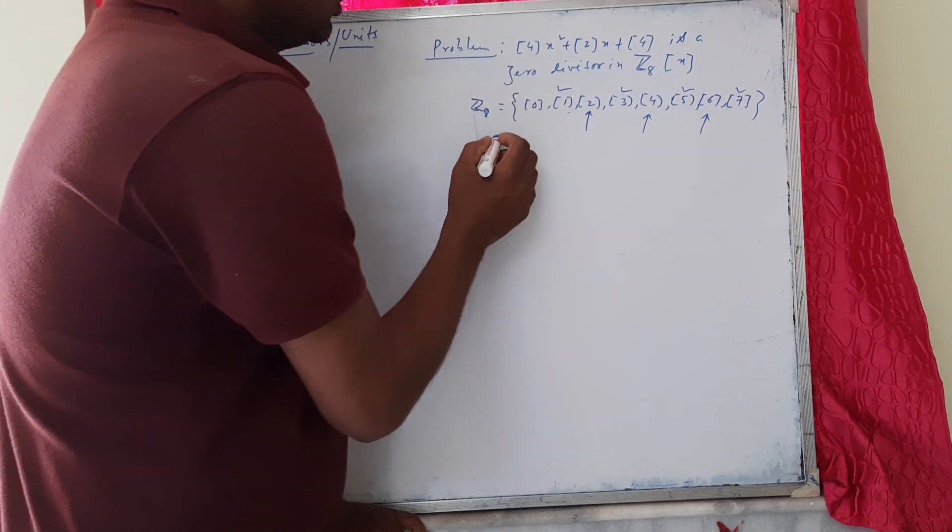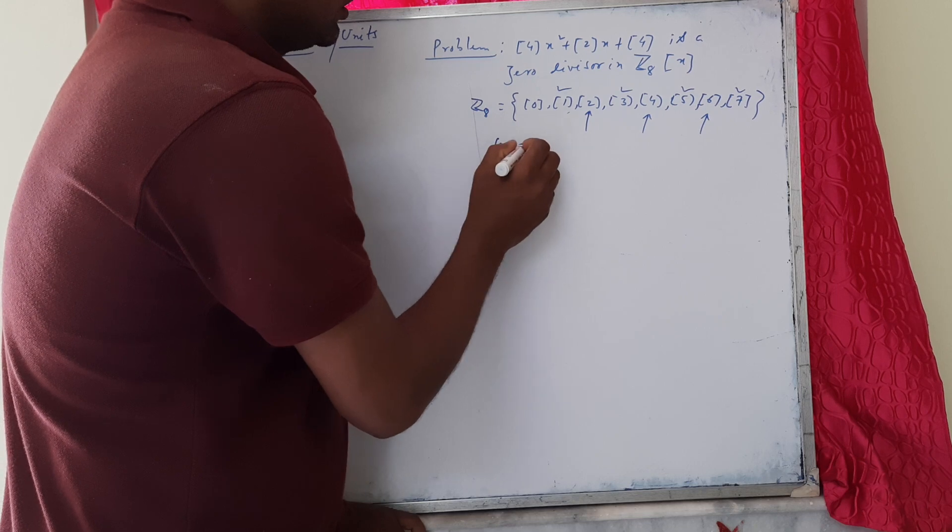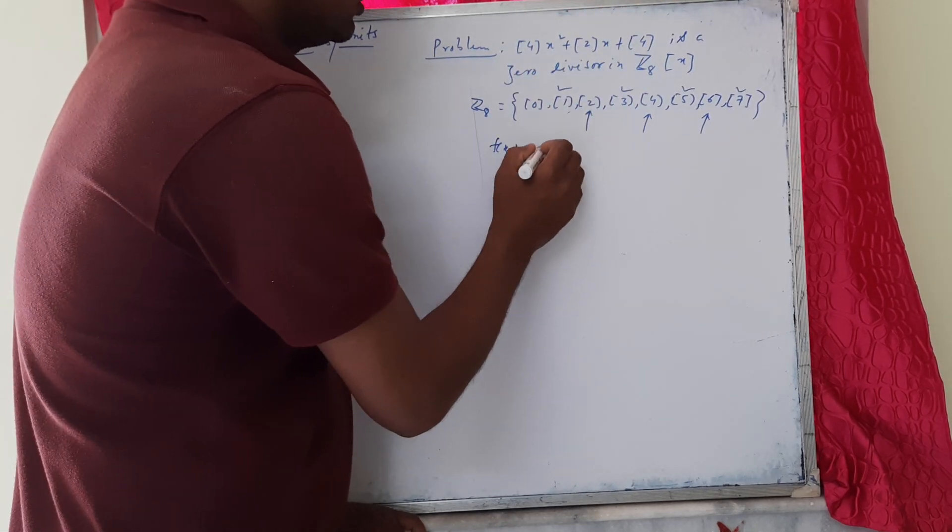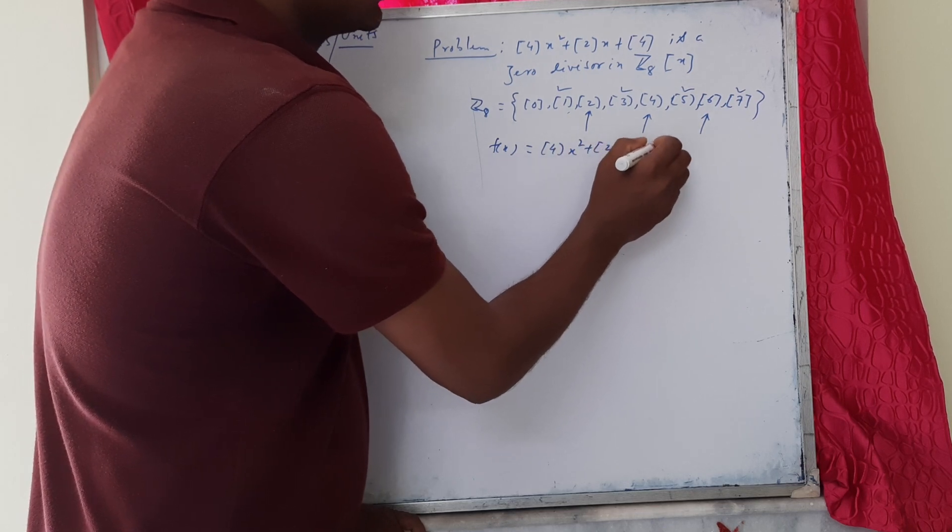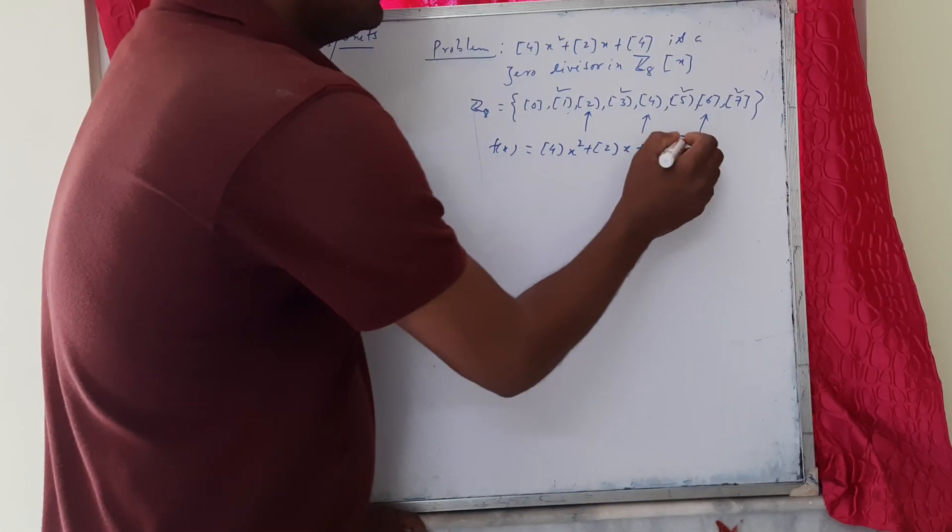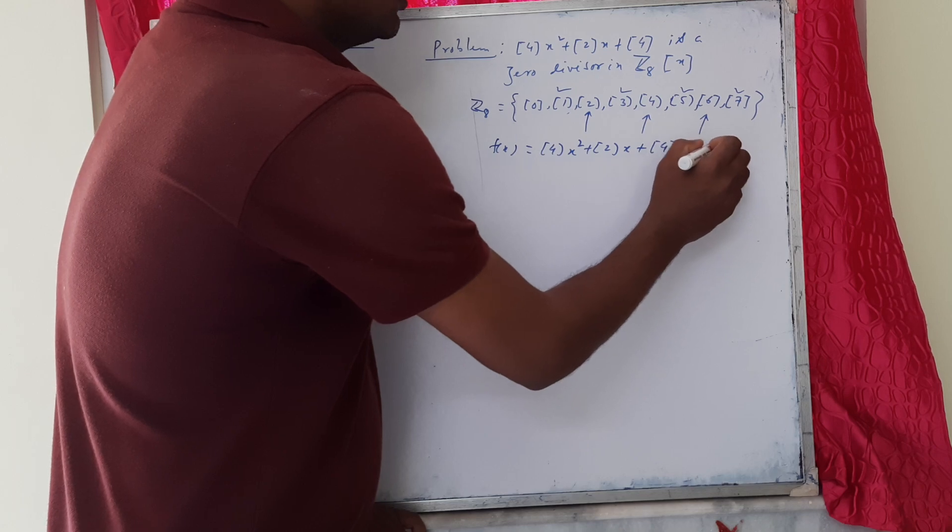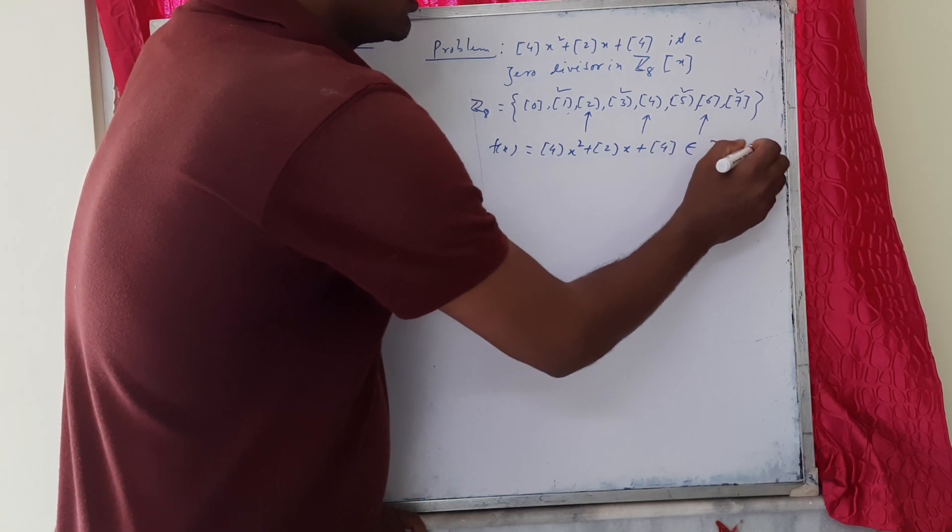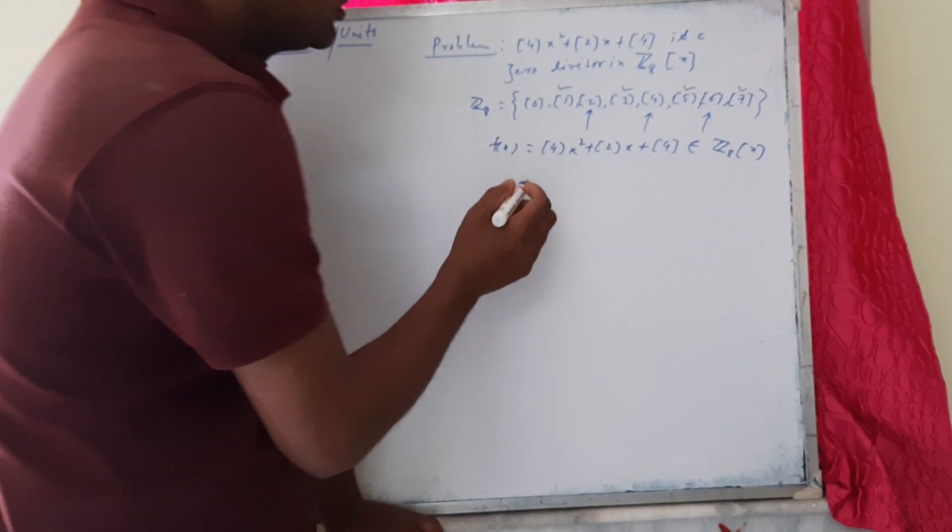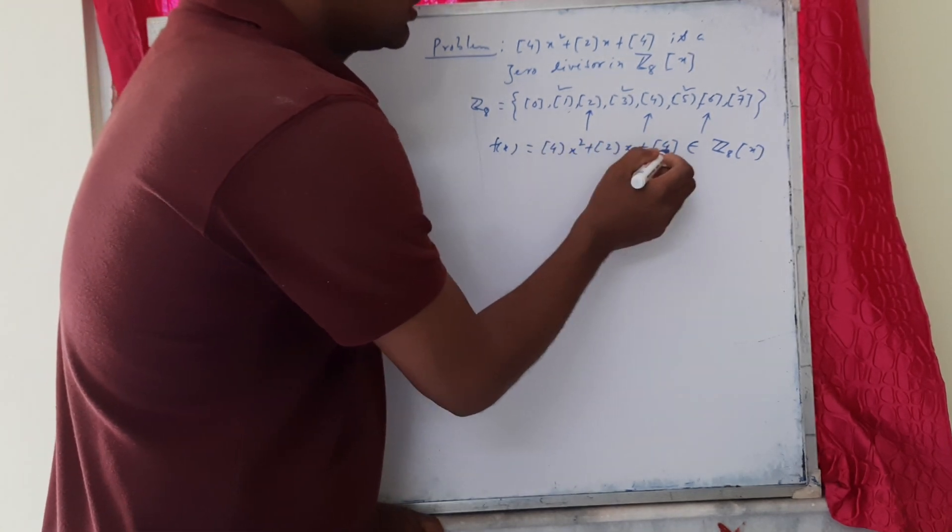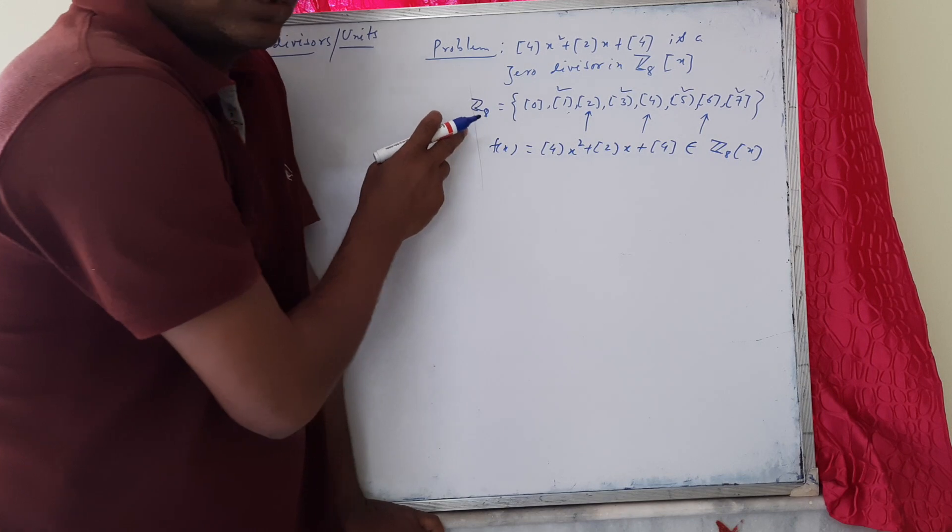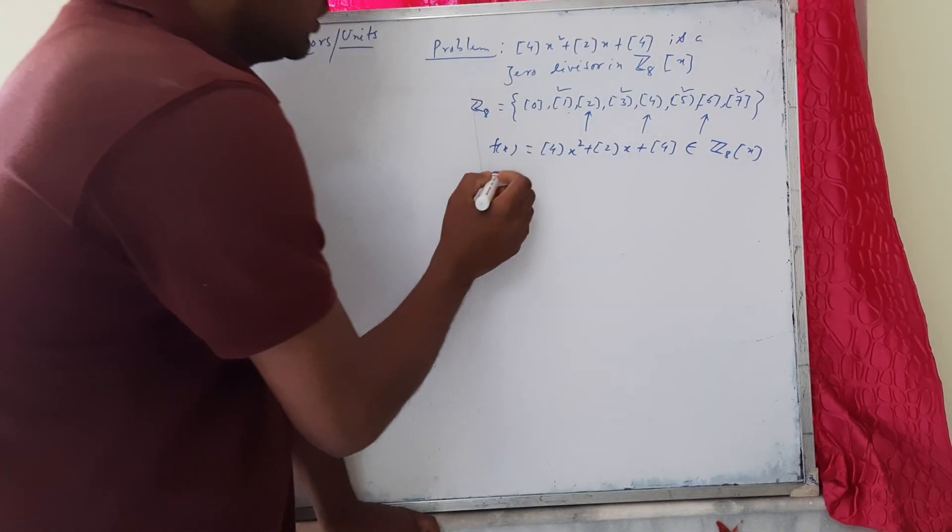Now, we let f(x) be that polynomial: class 4x² + class 2x + class 4 belongs to Z₈[x]. We observe that all the coefficients—class 4, class 2, and class 4—are zero divisors in Z₈.